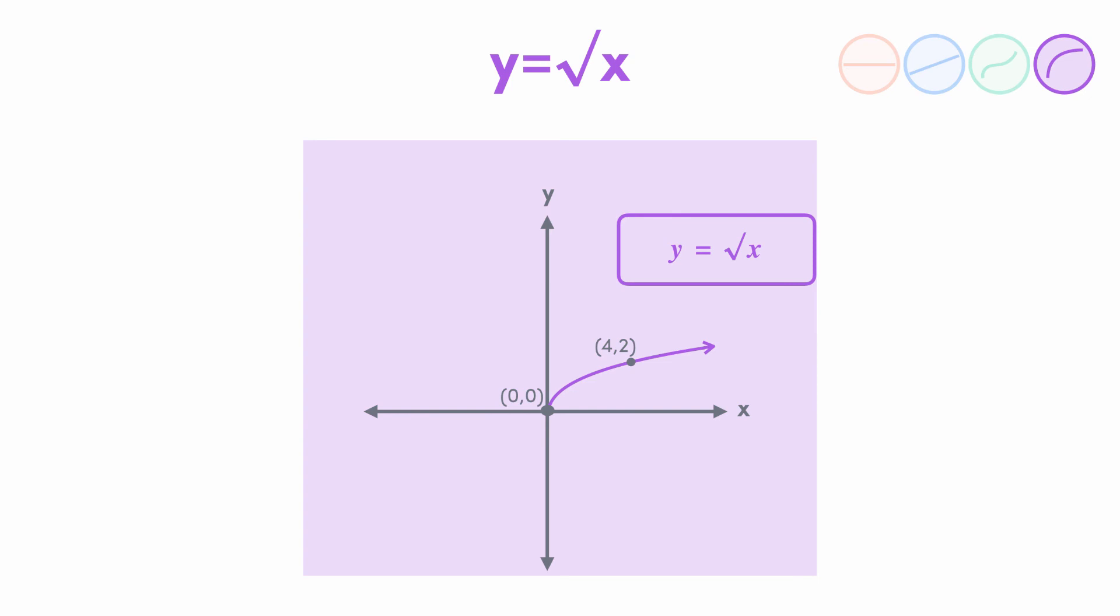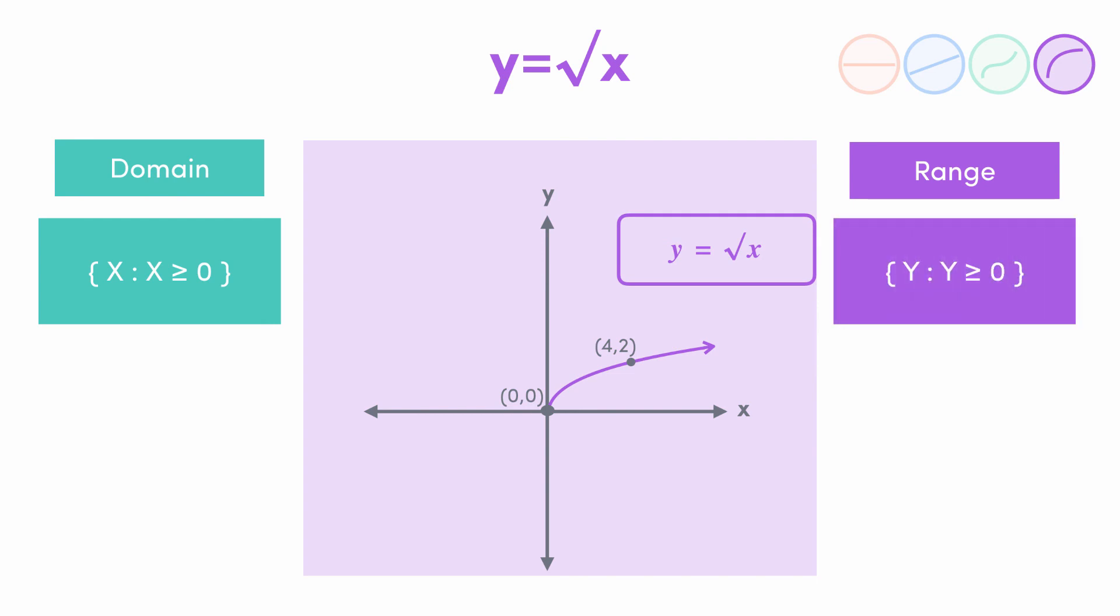Now the domain and range for this one is slightly more interesting. As we know, we can never take the square root of a negative number. This means that the domain of x is all positive numbers, x greater than or equal to 0. Similarly, if our function is taking the square root of positive numbers, we're never going to have the function output any negative numbers, because the square root of a positive number is still going to be positive. So the range of f of x is also y is greater than or equal to 0. You can see this looking at the graph, where the function only exists for positive x and y values.